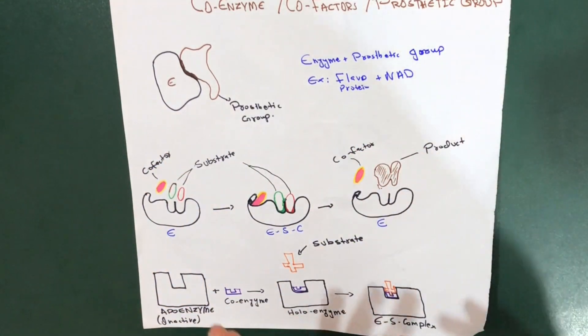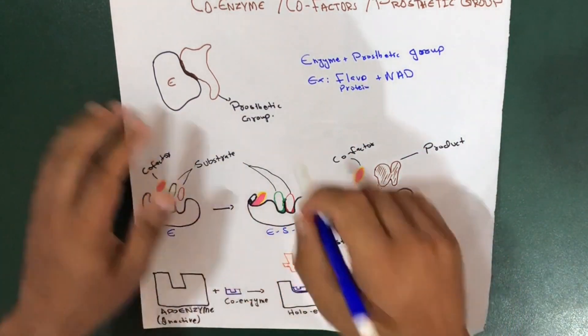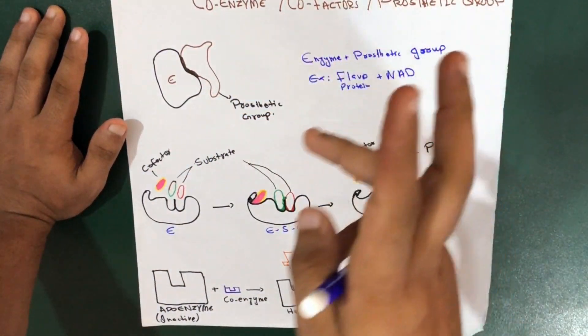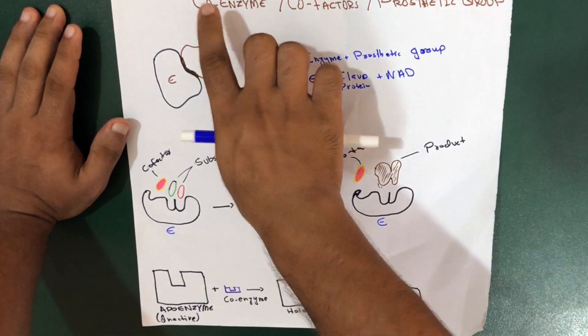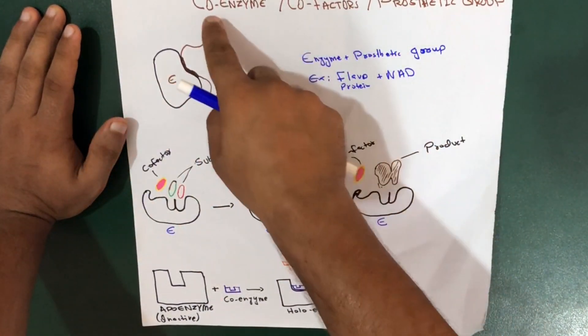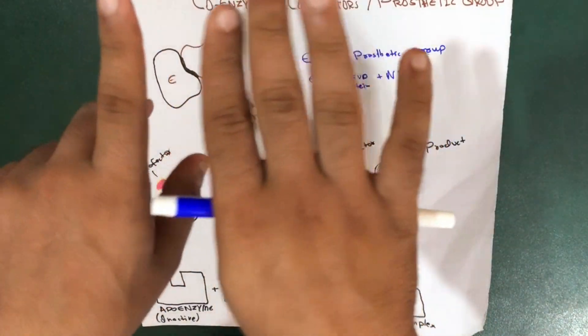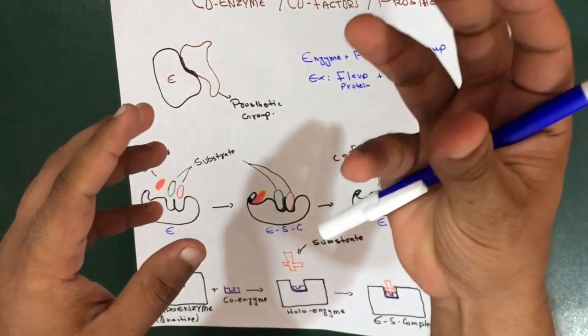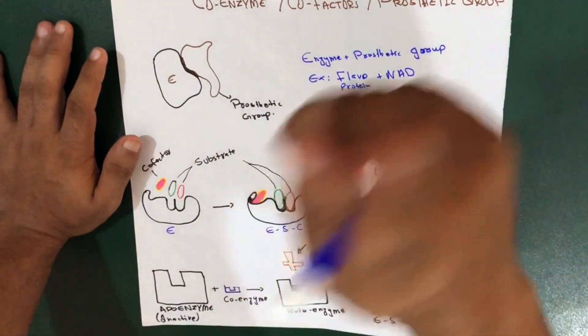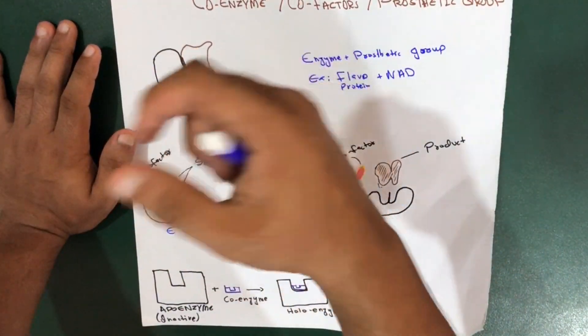Let's get started with the word coenzyme. Don't get confused with the word coenzyme. In English terms, this means something that is related to enzyme, attached to the enzyme. It means something is attached to the enzyme in terms of English, do not bring it to biochemistry.